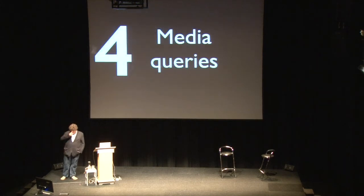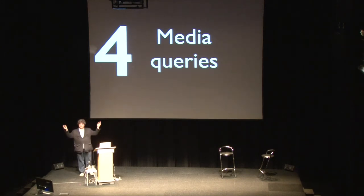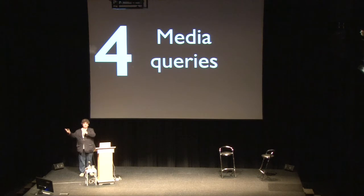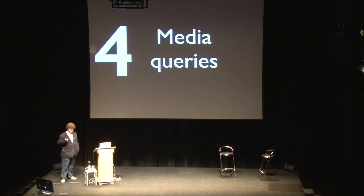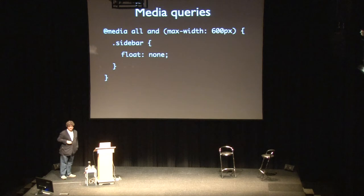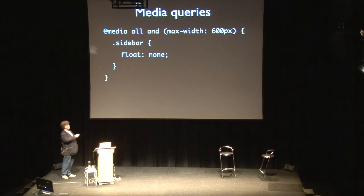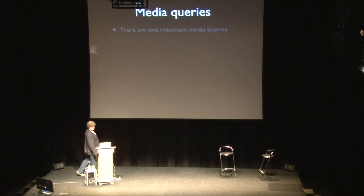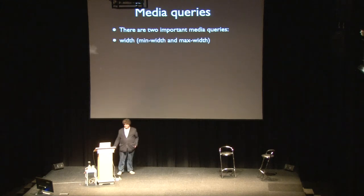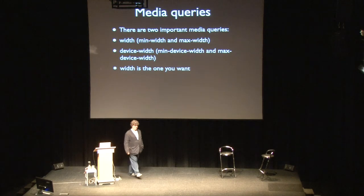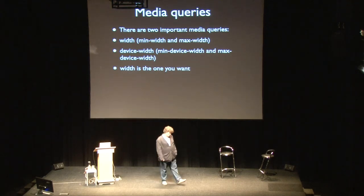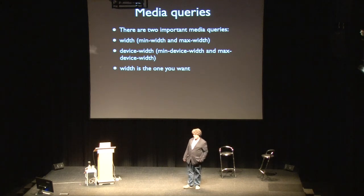Let's talk about media queries. We have now set the width of the layout viewport — which constrains your CSS layout — to the ideal viewport, which is ideally suited to the device. But you as a web developer still don't have a clue what that ideal viewport actually is. That's when media queries come into play. You've seen a media query — max-width: 600px — which means 'for widths up to 600 pixels.' But what does 'width' mean? There are two important media queries: width and device-width. Width is the one you want. I'm very sorry to say that if you're using device-width, you are doing it wrong.